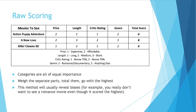Let's look at an example of a raw scoring matrix. Let's say you have three movies to see and you can't decide which one. You could see Action Puppy Adventure, A New Love, or Killer Clowns 3D. What's important when considering what movie to see? You could have price of the ticket, length of the movie, what the critics gave it, the genre of the movie, things like that. It's important to include a key or legend so that people looking at your Decision Matrix — or you, in case you come back to it at a different time — can remember how the scoring works.